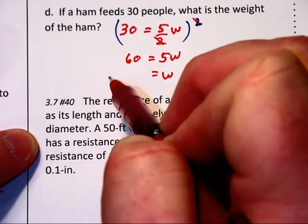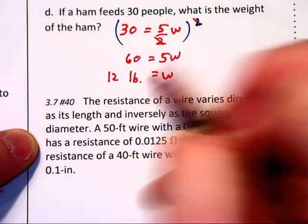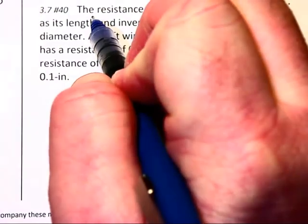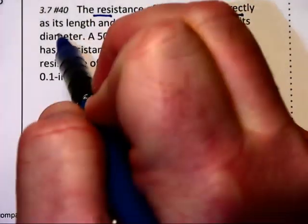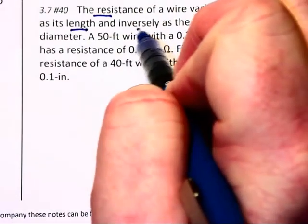The resistance of a wire, that will be R for resistance, varies directly as the length, and inversely as the square of its diameter.